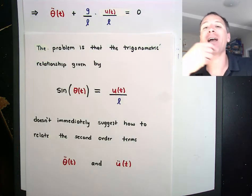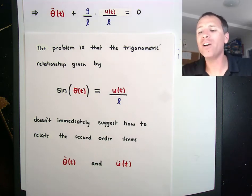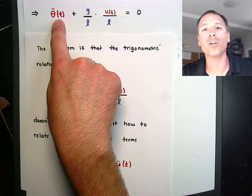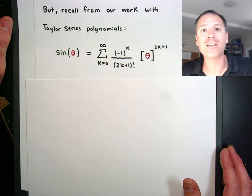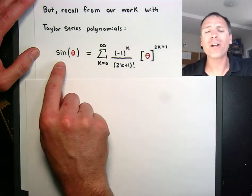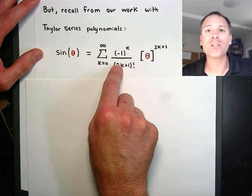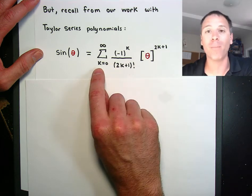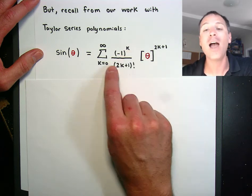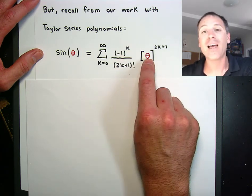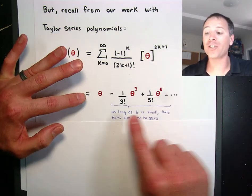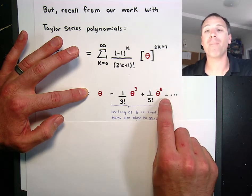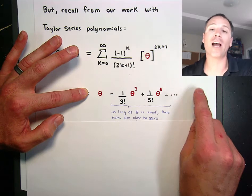After thinking carefully, we might recall that the sine of theta has a different representation using Taylor series. We can expand this thing as a Maclaurin series — the infinite sum where k goes from zero to infinity of negative one to the k divided by (2k+1) factorial times theta to the (2k+1). Expanding term by term: sine of theta equals theta minus (1/3!) theta cubed plus (1/5!) theta to the fifth minus (1/7!) theta to the seventh plus higher order terms.